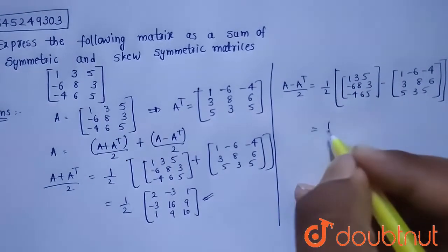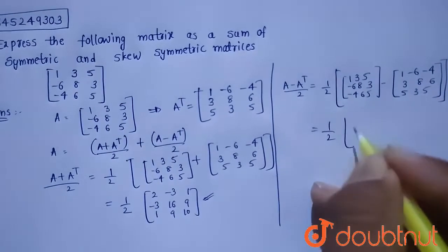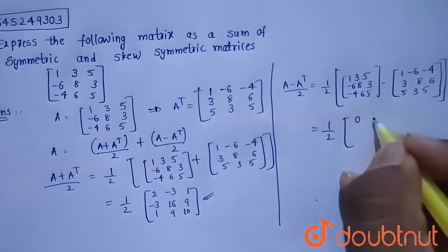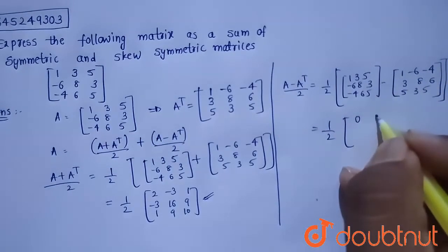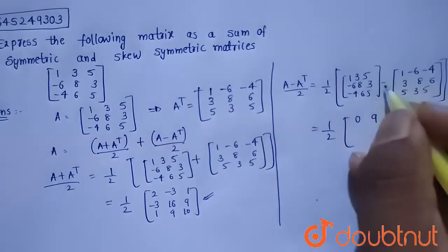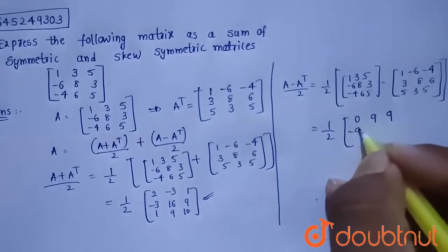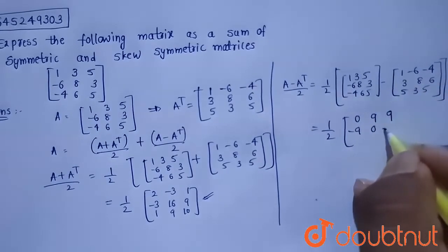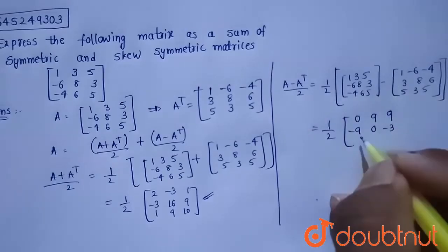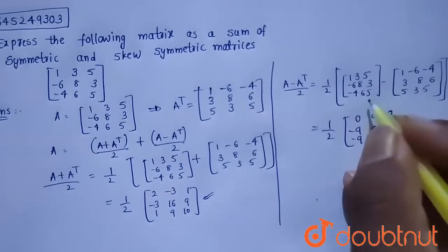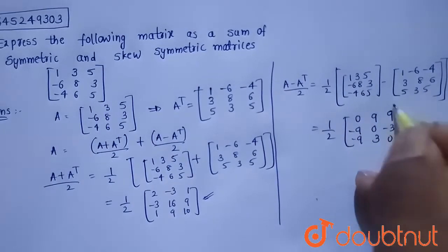Now let us subtract. So 1-1=0; 3-(-6)=9; 5-(-4)=9; -6-3=-9; 8-8=0; 3-6=-3; -4-5=-9; 6-3=3; 5-5=0. So the skew-symmetric matrix is [0, 9/2, 9/2; -9/2, 0, -3/2; -9/2, 3/2, 0].